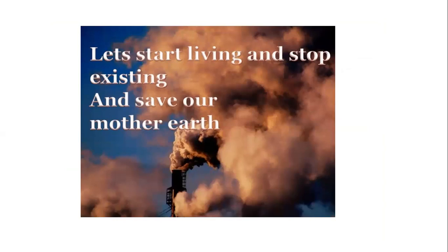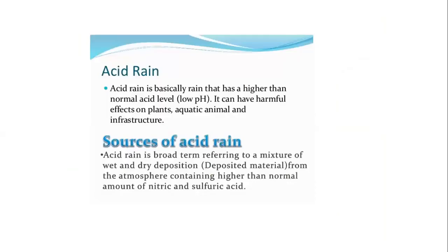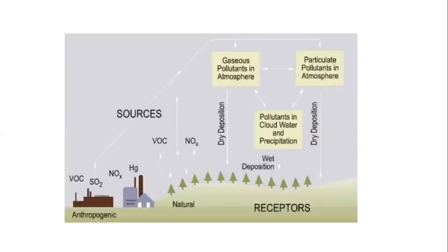Let's start living and stop just existing and save our mother earth. The last topic is acid rain. Acid rain is basically rain that has a higher than normal acid level, and can have harmful effects on plants, aquatic animals, and infrastructure. Sources of acid rain refer to a mixture of wet and dry deposition from the atmosphere containing higher than normal amounts of nitric acid and sulfuric acid. Sources include nitrogen oxides and gaseous and particulate pollutants in the atmosphere that mix into cloud water and precipitation.